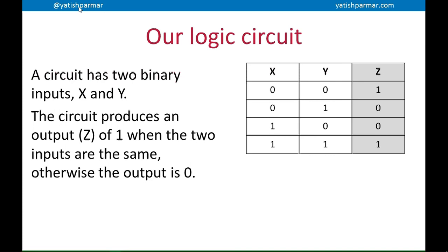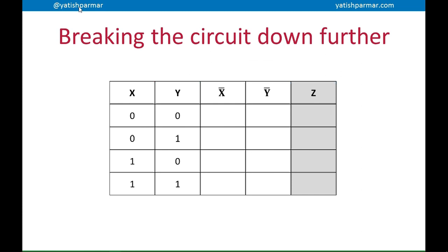Now, this is a logic circuit that we're going to have a practice with, or a worked example with. So we've got two binary inputs, X and Y. Z is going to be 1 when the two inputs are the same, otherwise the output is 0. You can see it there in the truth table. So basically what I'm going to do is I'm going to break that circuit down further to actually see in detail what's going on within it.